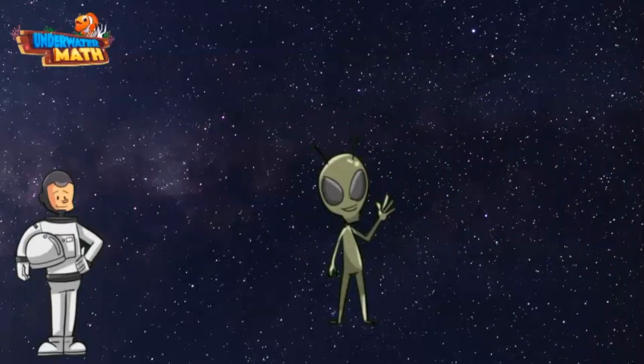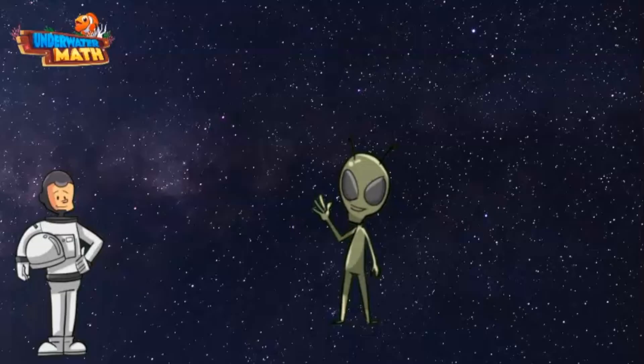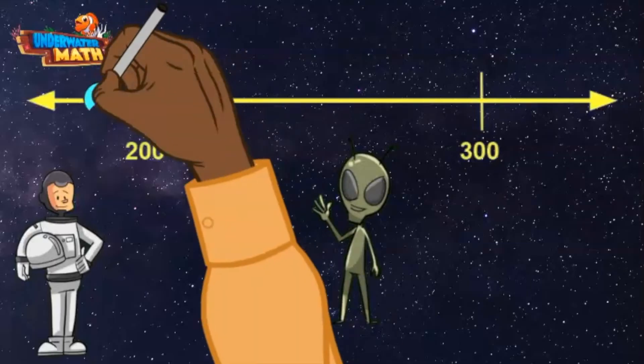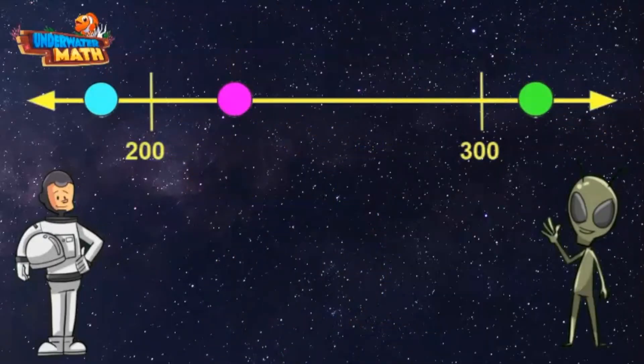Let's try another one. Lenny, give us a number line that has a tick mark for the number 200 and the number 300. You are the best, thanks! Now let's add some points. Boom! Now we need to determine what point on the number line best represents the number 230.